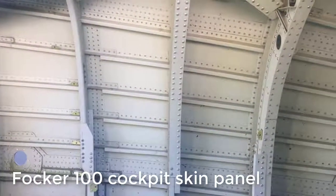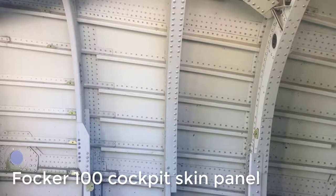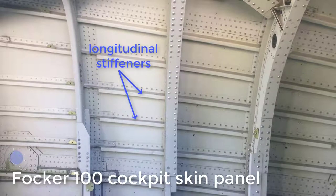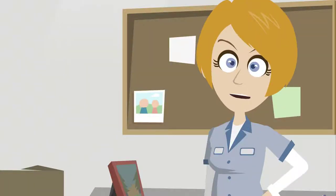These stiffened panels are precisely what is used in aerospace structures. A thin wing or fuselage skin is too weak on its own, but the inclusion of stiffeners strengthens it and allows it to handle the compression loading. You'll learn more about these structures in the next lecture.